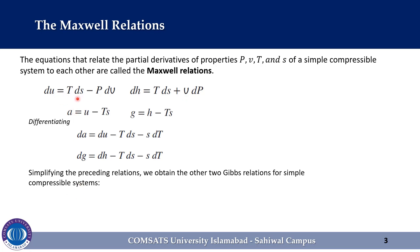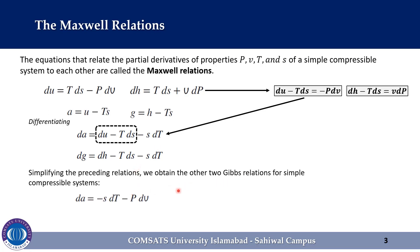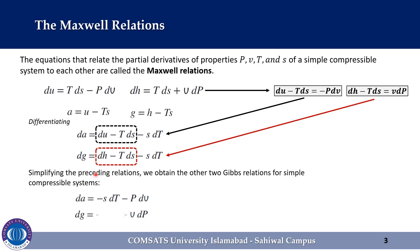The above expressions can also be written as: du minus T ds is equal to minus p dv, and dH minus T ds is equal to v dp. So after replacing du minus T ds with minus p dv, the first equation becomes dA is equal to minus s dT minus p dv. And in the second equation, by replacing dH minus T ds with v dp, we get dG is equal to minus s dT plus v dp.